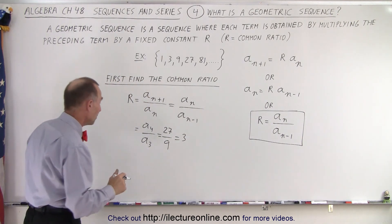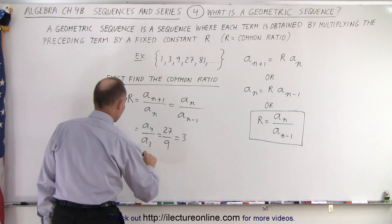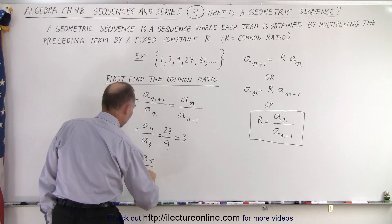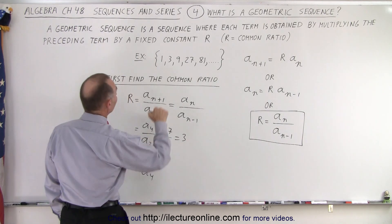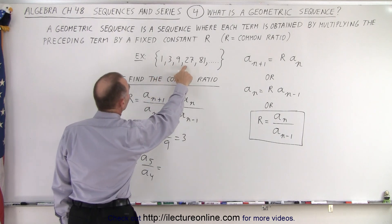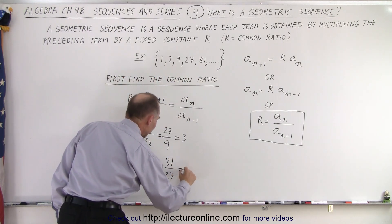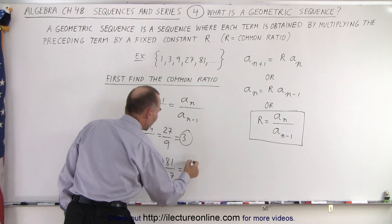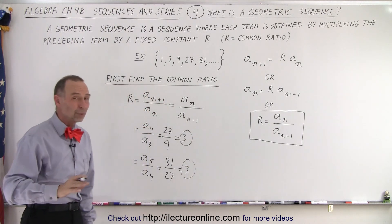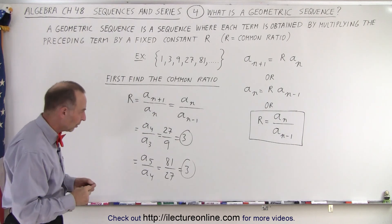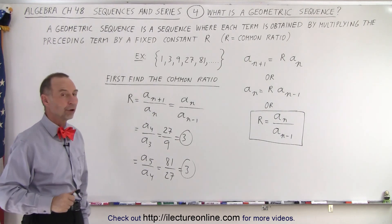And again, it doesn't matter which one we pick, we could have said this is equal to a sub five divided by a sub four. In this case, a sub five is 81, a sub four is 27, and again, the ratio is three. That common ratio will be the same between any two adjacent terms in the sequence, and that's called the common ratio.